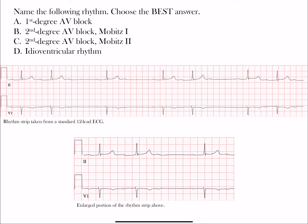To reorient yourself, we have two leads present here: Lead 2 and Lead V1. Lead 2 is an inferior limb lead and V1 is a right precordial lead. These are normally the best leads to get a good view of those P waves.